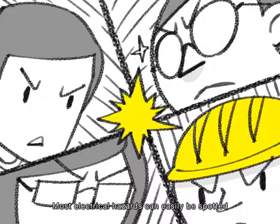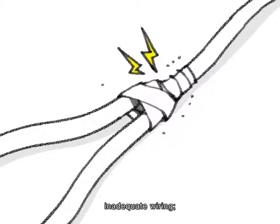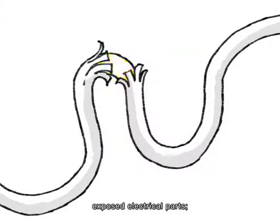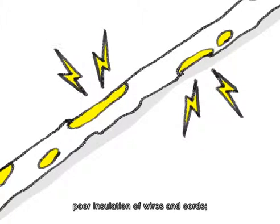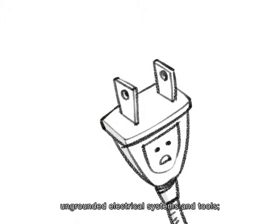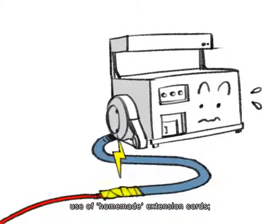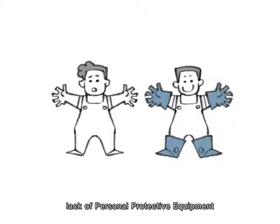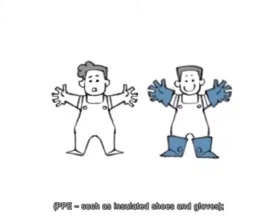Most electrical hazards can easily be spotted simply by paying attention to inadequate wiring, loose electrical connections, exposed electrical parts, poor insulation of wires and cords, ungrounded electrical systems and tools, overloaded circuits, use of homemade extension cords, damaged power equipment, and lack of personal protective equipment such as insulated shoes and gloves.